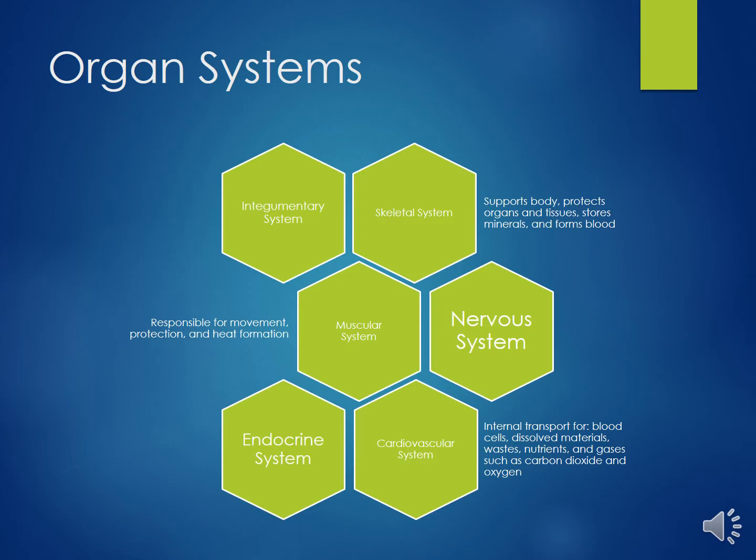The 11 organ systems in the body work together to keep the body functioning properly. The integumentary system protects the body from outside surroundings and regulates body temperature. The skeletal system supports the body, protects the organs and tissues, stores minerals, and forms blood.